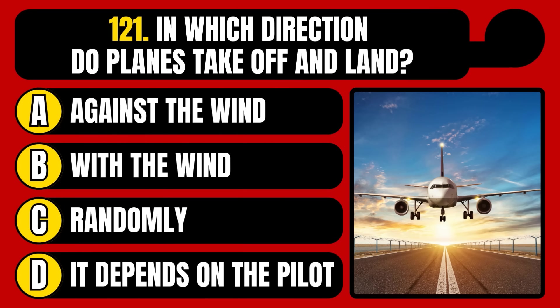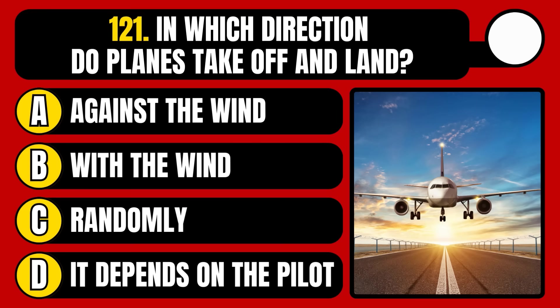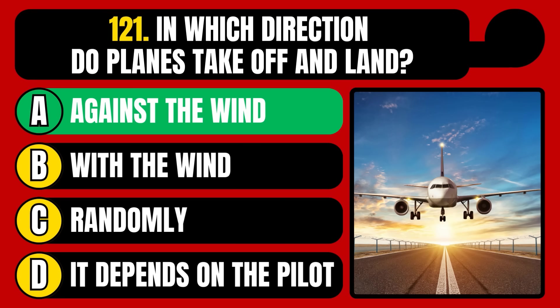In which direction do planes take off and land? Against the wind, with the wind, randomly, or it depends on the pilot? The correct answer is option A, planes take off and land against the wind.